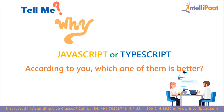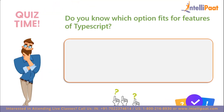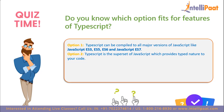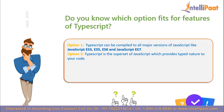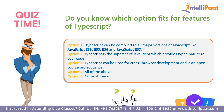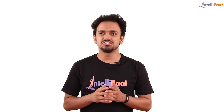We are heading towards the end of the video. Here's a quiz question: from the options below, which fits as a feature of TypeScript? Option 1: TypeScript can be compiled to all major versions of JavaScript like ES3, ES5, ES6, and ES7. Option 2: TypeScript is a superset of JavaScript which provides type nature to your code. Option 3: TypeScript can be used for cross-browser development and is an open-source project. Option 4: All of the above. Option 5: None of these. Write your answer in the comment section below. I hope this video was helpful. If you have any queries, let us know in the comments and we'll reach out immediately. Thank you so much for watching!